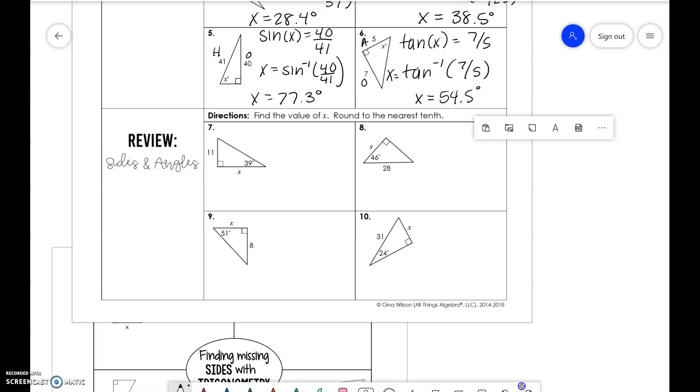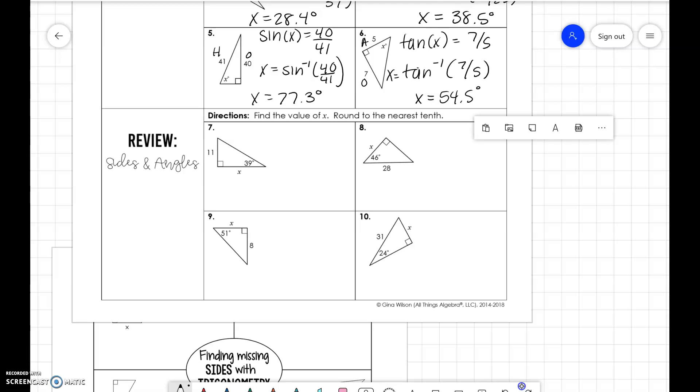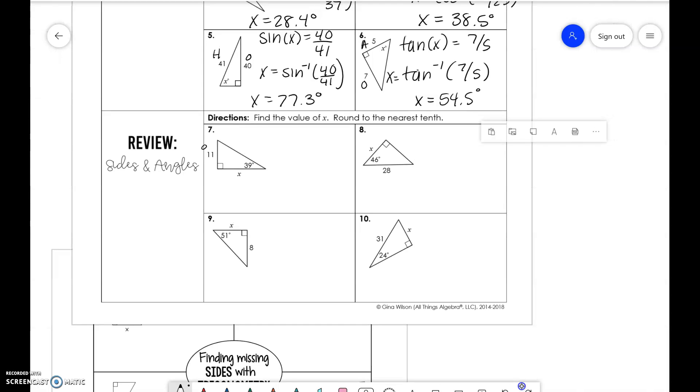So doing a little bit of a review with sides and angles. This is a kind of mixed review. We have opposite and adjacent. So tangent of 39 is equal to 11 over x. So we get x is equal to 11 divided by tangent of 39.9 which is 13.6.